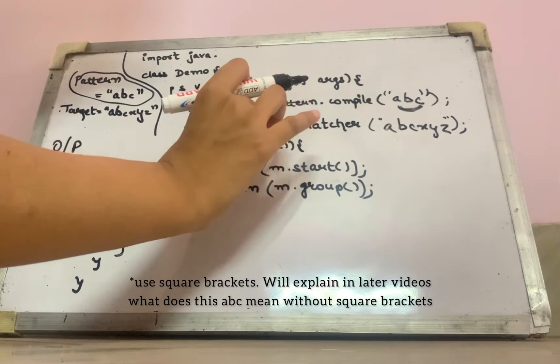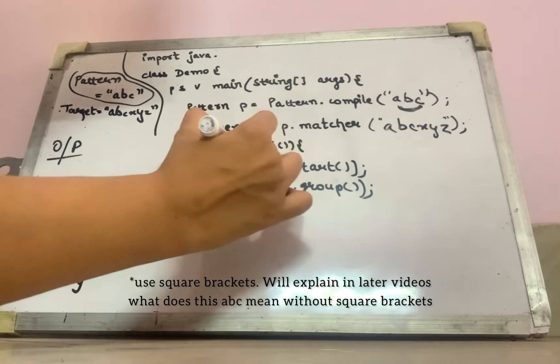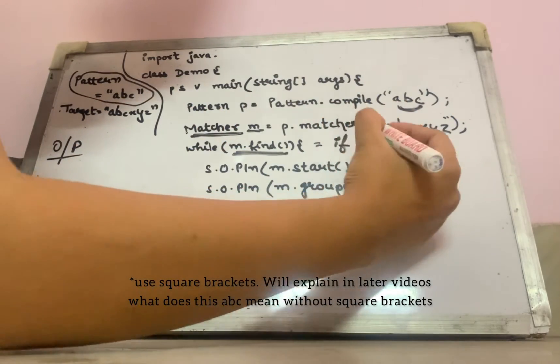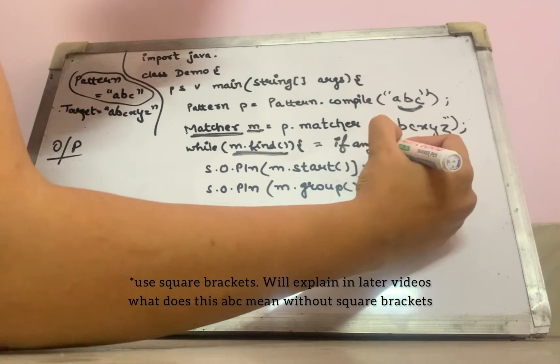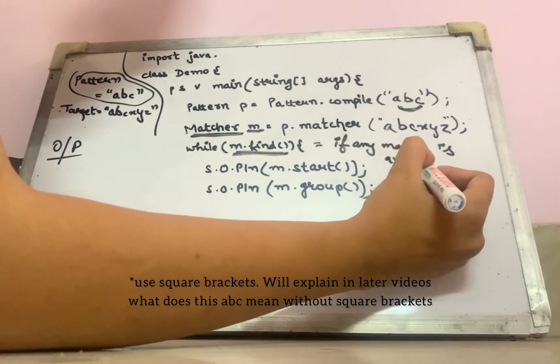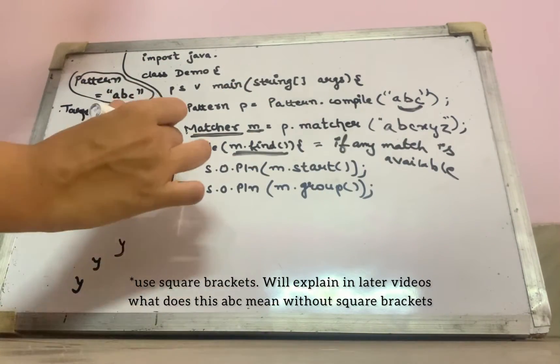Now if I get the matcher class object, if any match is available, it means m dot find means if any match is available. If any match is available, then we will go into this while loop. Otherwise, we will just exit from the while loop.